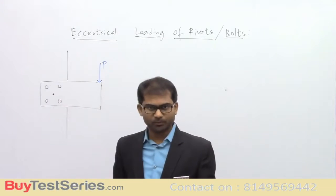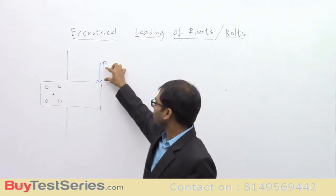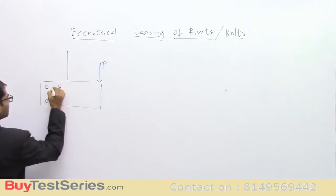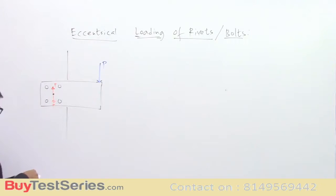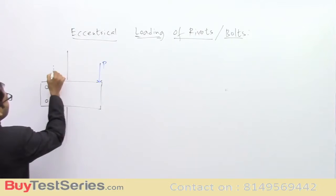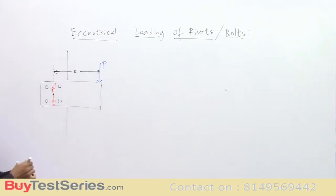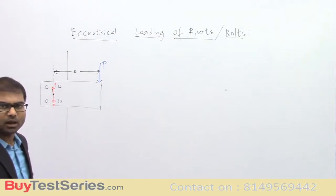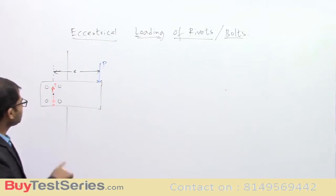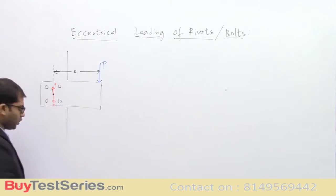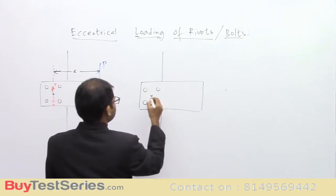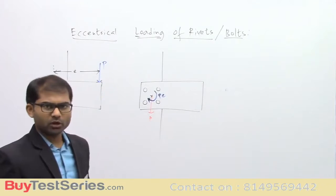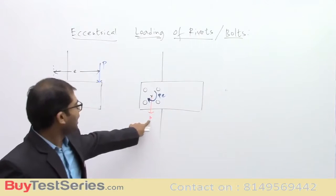When the force passes eccentrically, the effects of the loads are different compared to when the line of action passes through the centroid. To analyze this, I transfer load P to the centroid by placing an equivalent opposite force there — P upward and P downward. Taking this eccentric distance as 'e', the upward and downward forces form a couple of magnitude P×e in the clockwise direction. So the effect of force P is given by a direct force P and a clockwise moment P×e at the centroid.